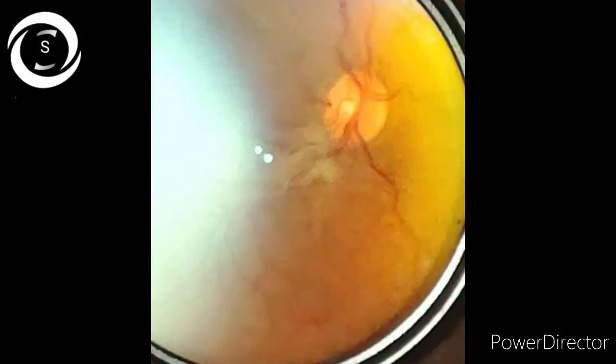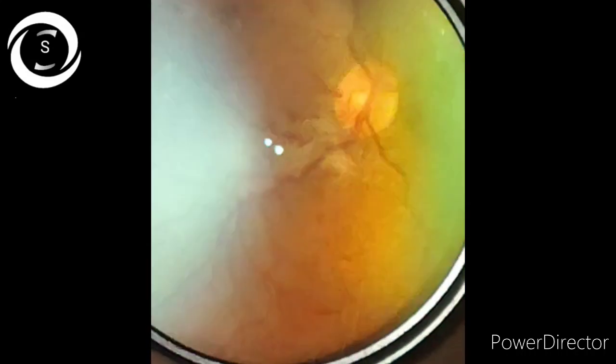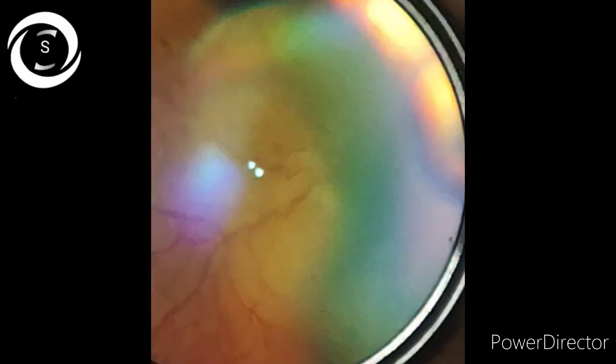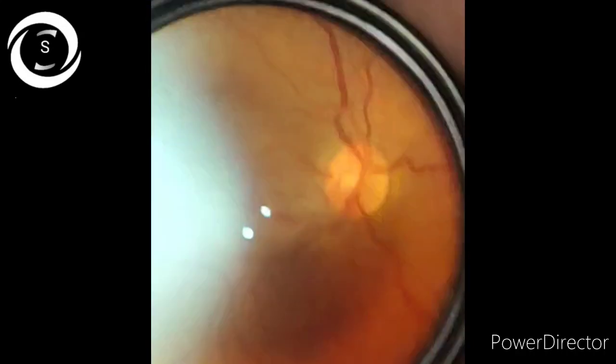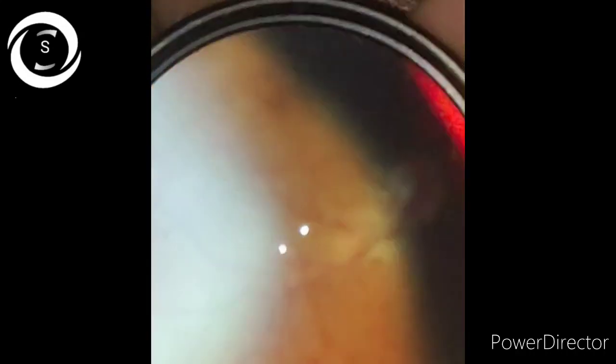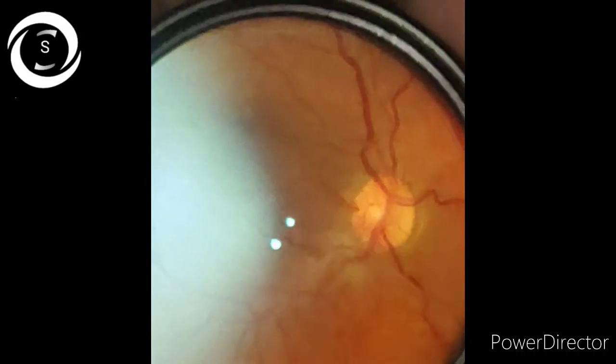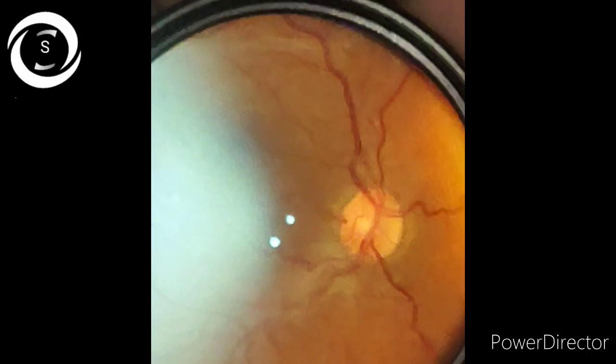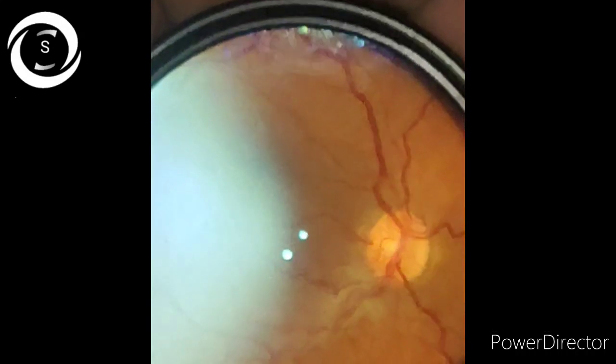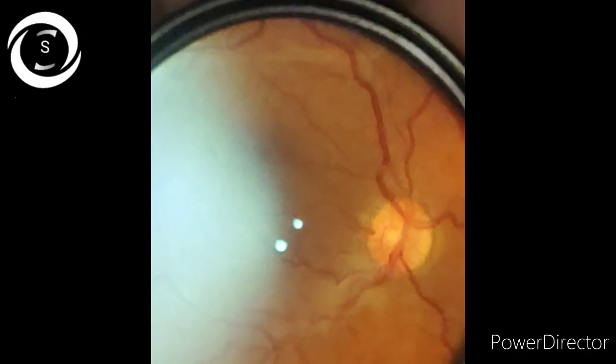So I dilated him and got this fundus picture of bilateral proliferative disease, and he is an active driver. Just imagine. When I asked him about the last fasting blood sugar checkup, he didn't remember exactly how many months back he had his fasting.